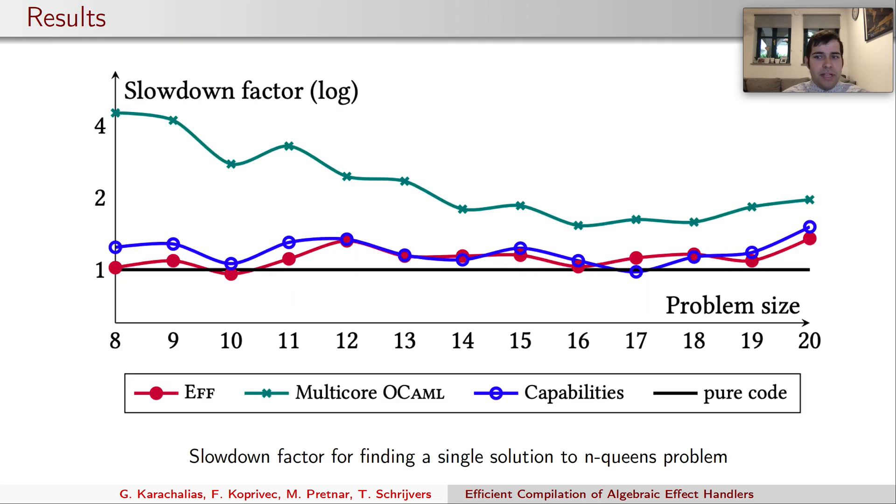The results presented in a more detailed version in the paper are quite promising. Here we can see a graph of a slowdown factor of our F compiler in red, capability passing style compilation in blue and multi-core OCaml when the user has to manually copy continuations on multiple resumptions in green. All the code is benchmarked relative to pure OCaml code without effects. This specific benchmark is for calculating one solution for the N-queens problem using the handlers for backtracking.